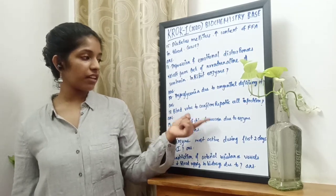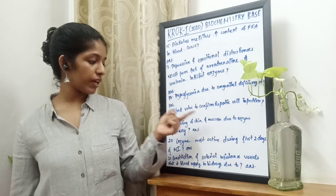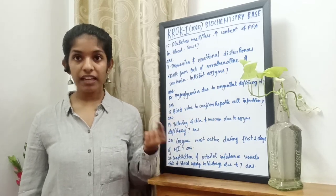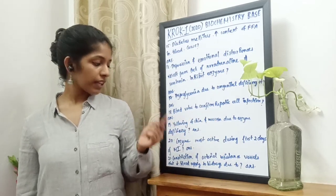Next question: yellowing of the skin and mucous membranes is due to an enzyme deficiency. The enzyme is UDP-glucuronyl transferase.